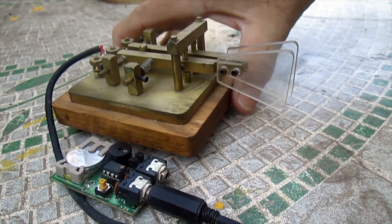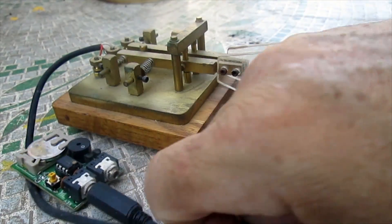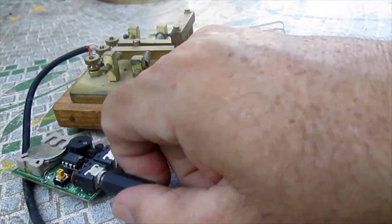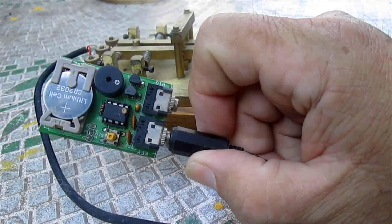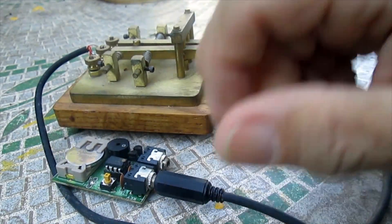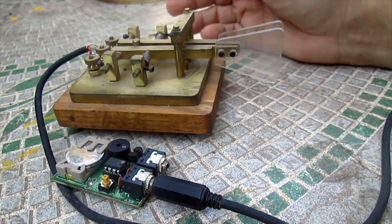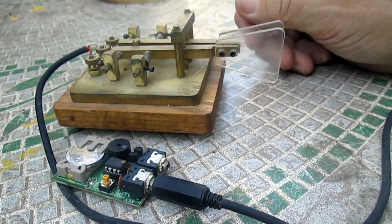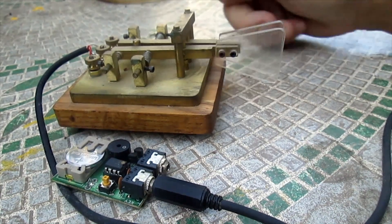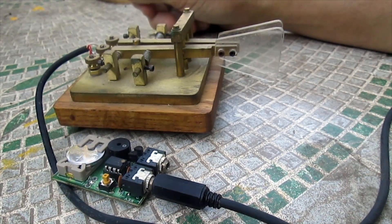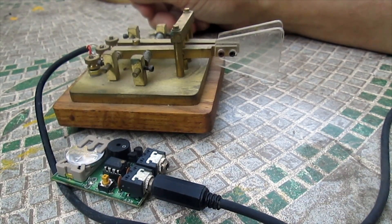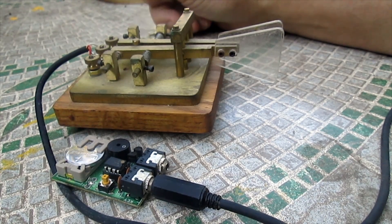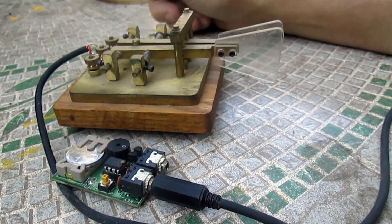So there we go, Morse code, the iambic paddle, and we've got the keying chip to help us produce really solid, really easy to understand Morse code. This is Mike Kennedy, M005 Kennedy. I hope you'll tune in again as I continue to, piece by piece, talk a little more about ham radio.